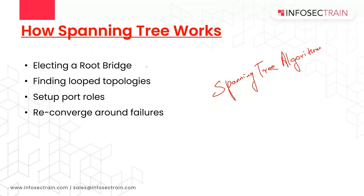STP uses three criteria to choose whether to put an interface in forwarding state. First, it elects a root switch — also called root bridge (where 'bridge' here refers to the switch, not the physical bridge device).